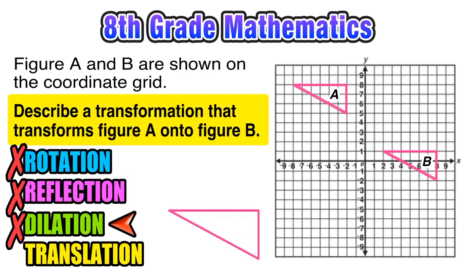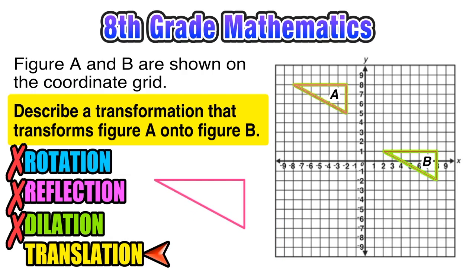Now our last transformation is a translation, which we know is a slide from one location to another. This should make sense in this case because if we look at figures A and B, we see that we're just taking A, sliding it to a new location, and it becomes B.